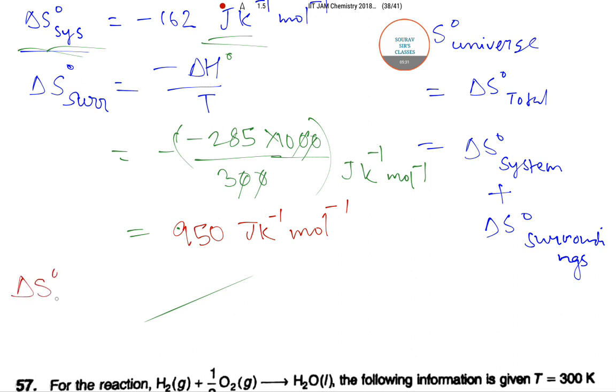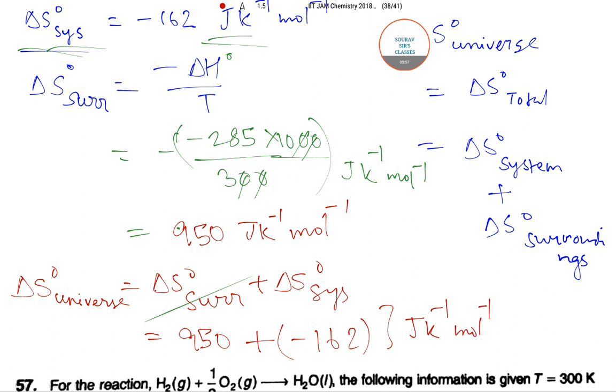So the ΔS° for universe will be equal to ΔS° for surroundings plus ΔS° for system, and this is equal to ΔS° for surrounding is 950 and ΔS° for system is minus 162, so this is minus 162 in joules per Kelvin per mole inverse, which is equal to positive 788 joules per Kelvin per mole. So the answer is plus 788.